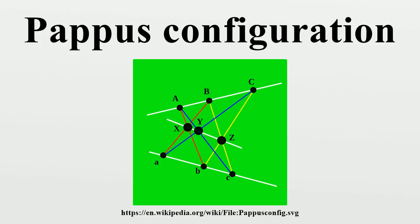The Levi graph of the Pappus configuration is known as the Pappus graph. It is a bipartite symmetric cubic graph with 18 vertices and 27 edges.